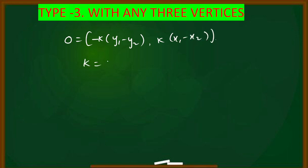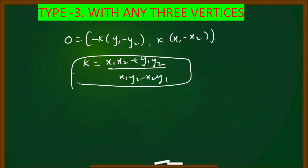This formula uses k = (x1·x2 + y1·y2) / (x1·y2 - x2·y1). The normal method takes about 5 to 6 minutes, nearly 7 minutes. Using this trick, we can find the answer very fast, within 1 to 2 minutes.